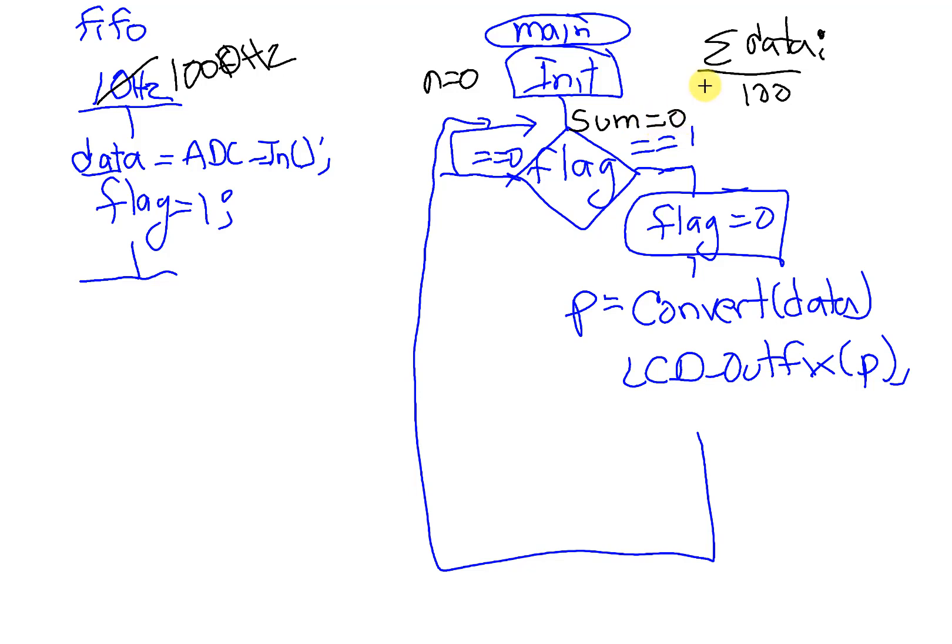Then what I'm going to do is every time I get a piece of data, I'm going to do sum equals sum plus data. I'm going to average it up. I'm going to increment my counter, and now if n is equal to 100, then I'm going to calculate the average.